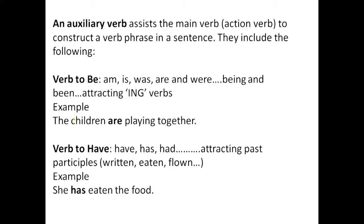We have different kinds of auxiliary verb. We have verb to be, verb to have, verb to do, and modal auxiliary verb. Verb to be — whenever you have verb to be, we mean am, is, was, are, were, and even being and been. The most common ones we consider are am, is, was, are, and were. They are all under verb to be, which is one kind of auxiliary verb.